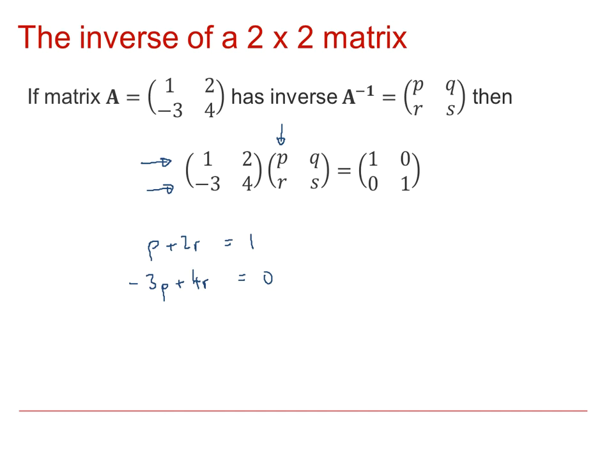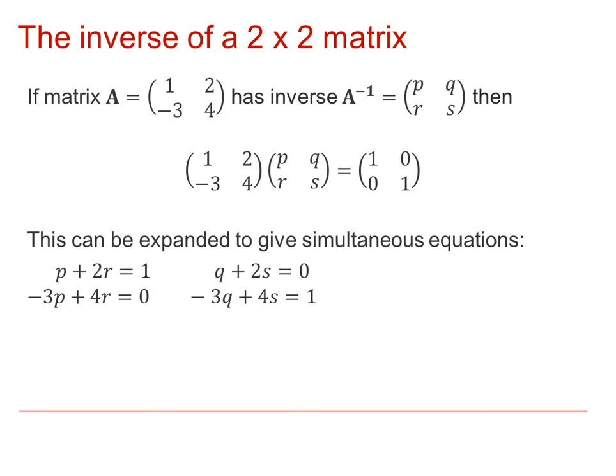In a similar way, but this time multiplying by not the first column, but the second column, you can get a pair of equations for Q and S. So, there's the two sets of equations, and you can check for yourselves that when you solve those, you get these values for P, Q, R, and S.